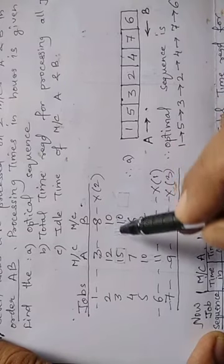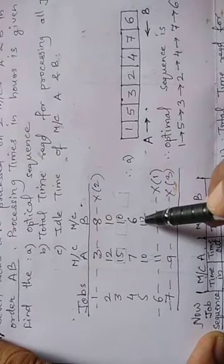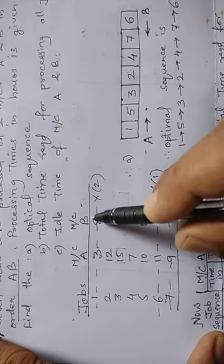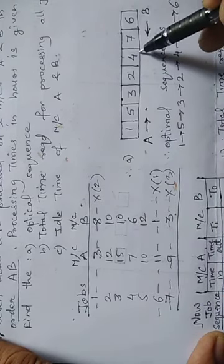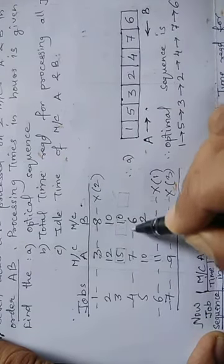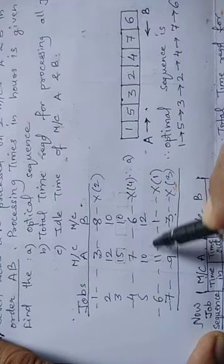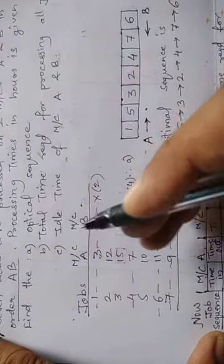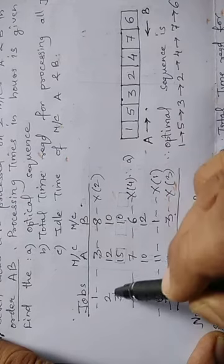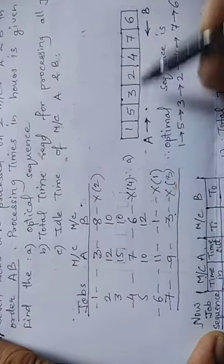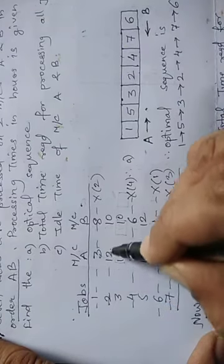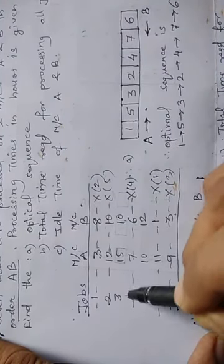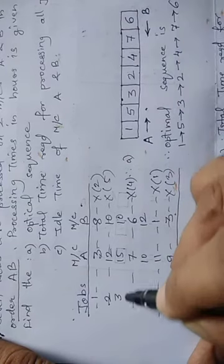Continuing, the next minimum is 6 hours for job 4 under Machine B, so write job 4 from the right side and delete the row. Next minimum is 10 hours for job 2 under Machine B — write job 2 from the right side and delete. Then 10 hours for job 3 under Machine A — write job 3 from the left side and delete that row as well.